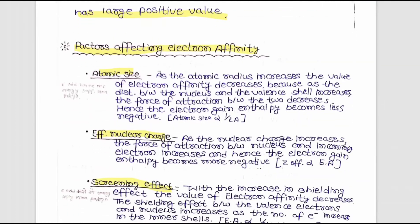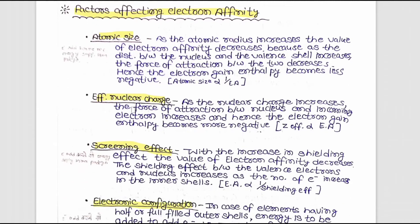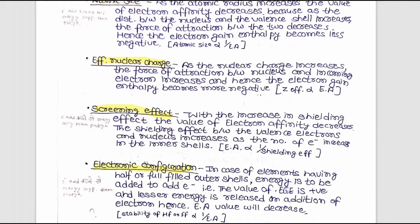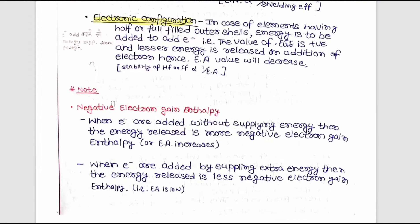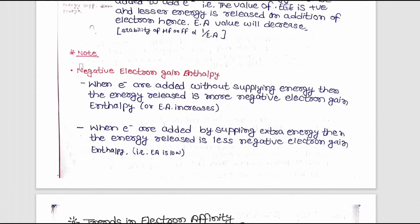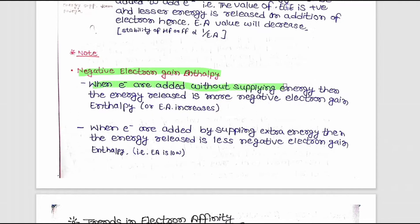The factors affecting electron affinity are atomic size, effective nuclear charge, screening effect, and electronic configuration. Note: when electrons are added without supplying energy, the energy released corresponds to a more negative electron gain enthalpy.